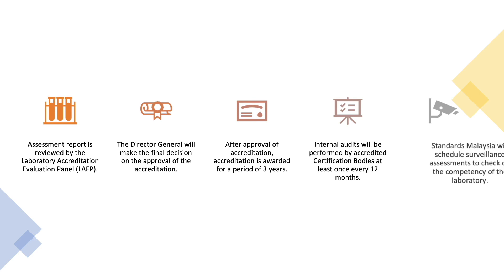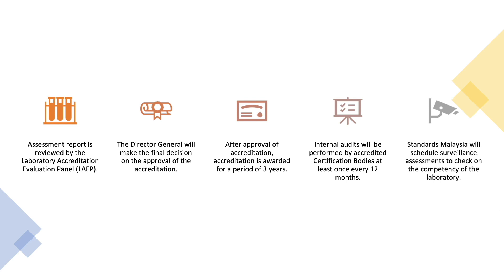Standards Malaysia will also schedule surveillance assessments. For the first cycle, the first surveillance assessment will be scheduled 9 months from the date of granting the certificate. The second surveillance assessment will be scheduled 12 months from the first surveillance. Lastly, a reassessment will be scheduled 3 months before the date of expiry of the accreditation.